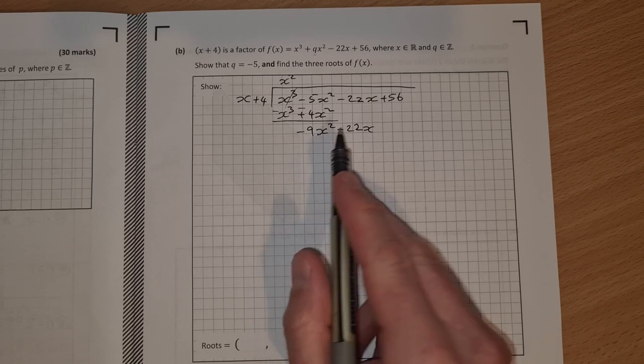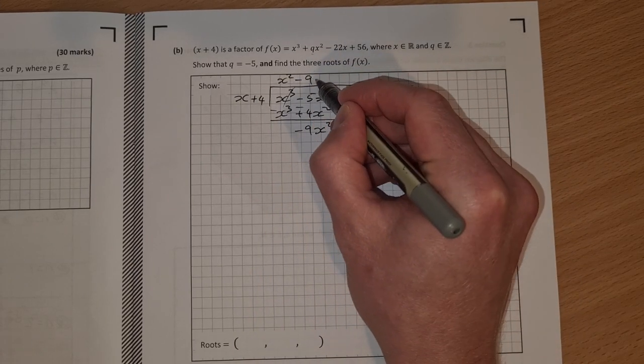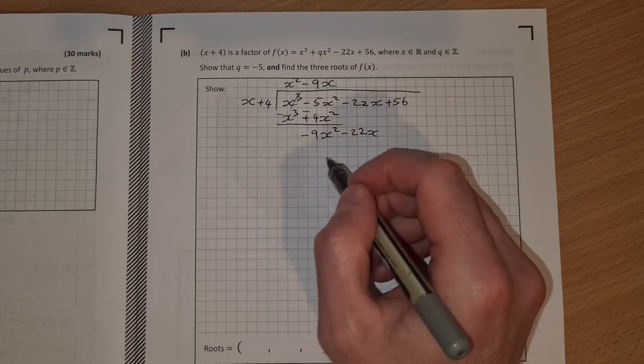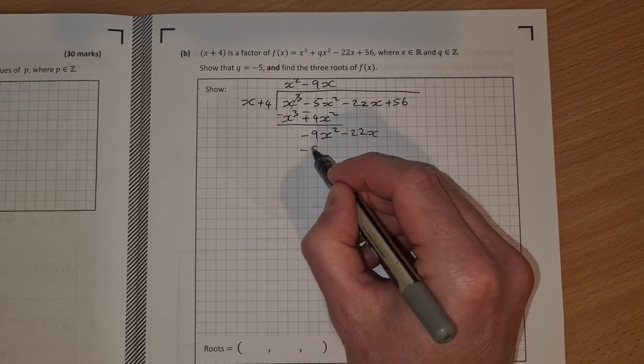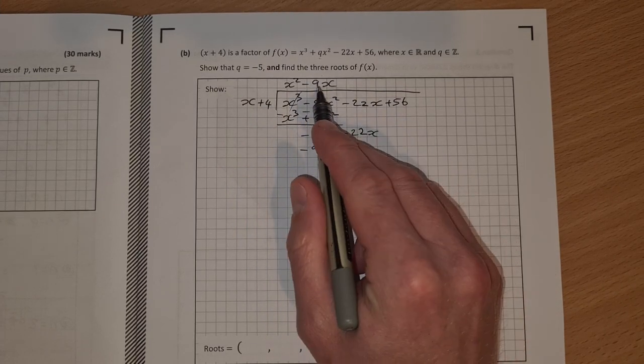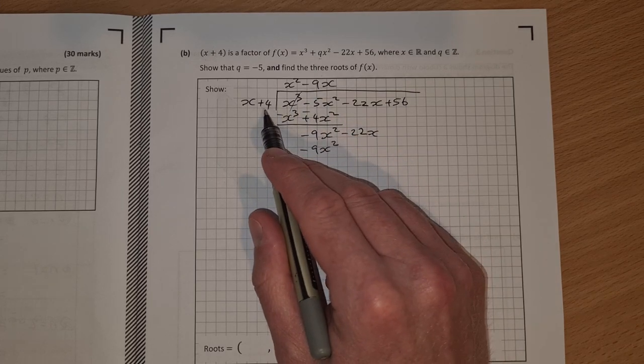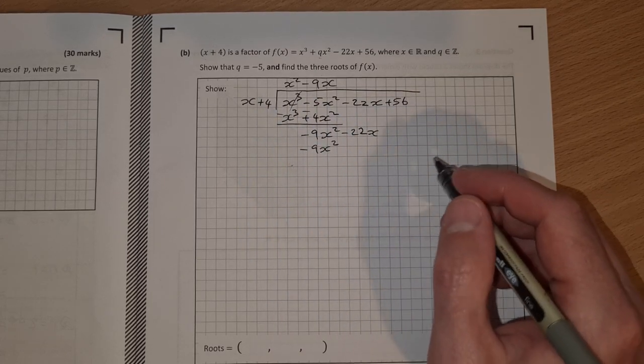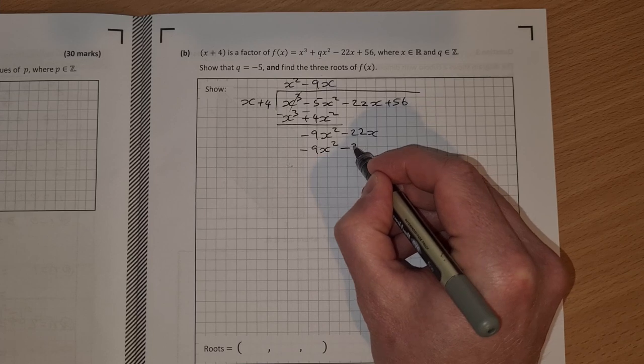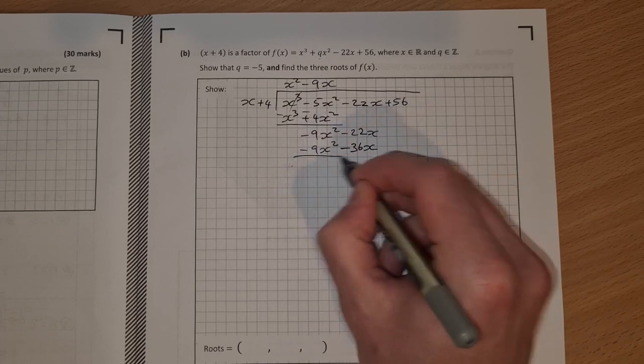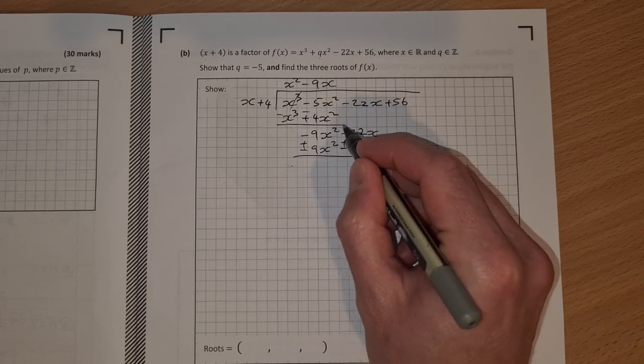x into minus 9x squared is minus 9x, multiply down, minus 9x by x is minus 9x squared, minus 9x by 4, then this time will be minus 36x and change the signs on both of them, they cancel.